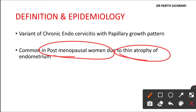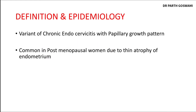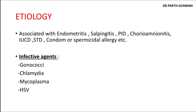In postmenopausal women, after menopause, hormones like estrogen and progesterone are absent, so the endometrium becomes atrophied. Because of this endometrial atrophy, inflammation of the cervix can develop, leading to endocervicitis after menopause.